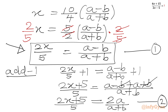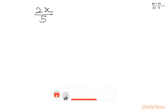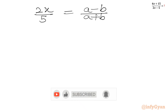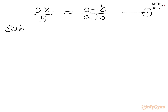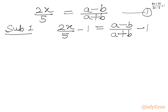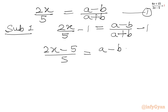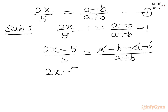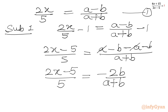Now I will subtract 1 from both sides. We will write 2x/5 - 1 = (a - b)/(a + b) - 1, or we can write (2x - 5)/5 = (a - b - a - b)/(a + b). Now we cancel plus a and minus a. So (2x - 5)/5 will be equal to minus 2b/(a + b). This is our equation number 3.